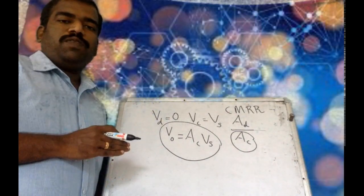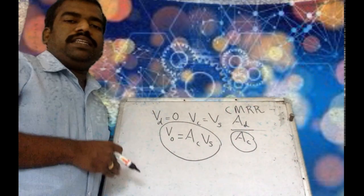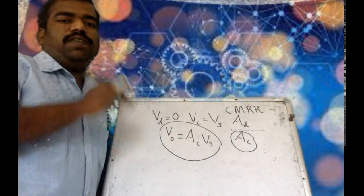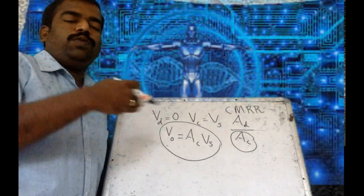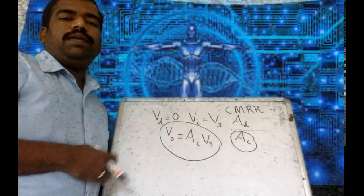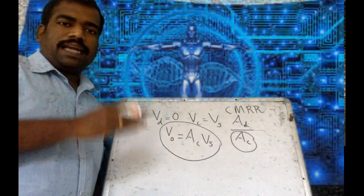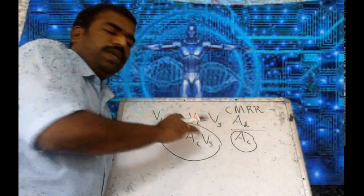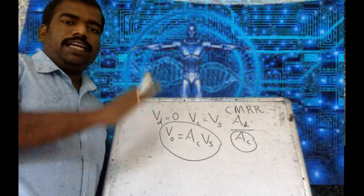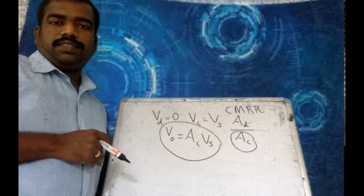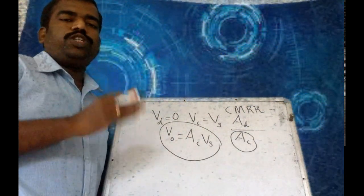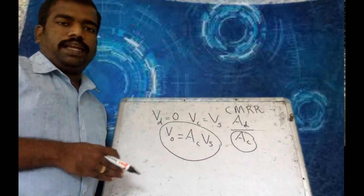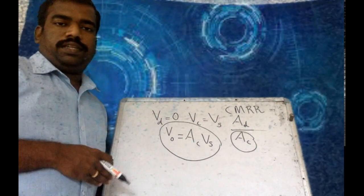For a better operational amplifier, this CMRR value can be very high, which means the operational amplifier will reject the common signal and amplify the differential signal. In practice, CMRR must be very large. This is called CMRR — Common Mode Rejection Ratio — of an operational amplifier, and it must be a large quantity.